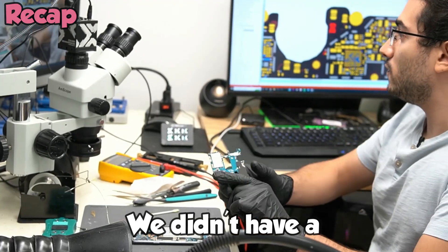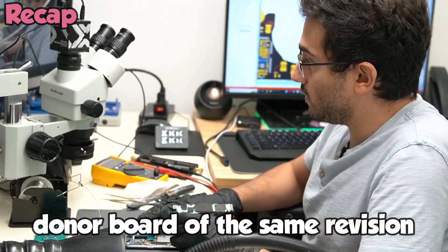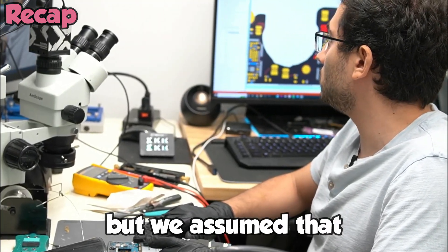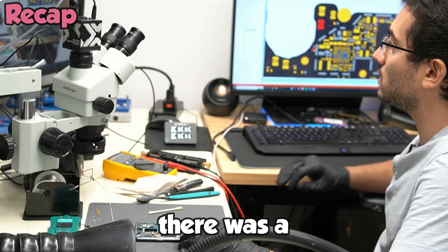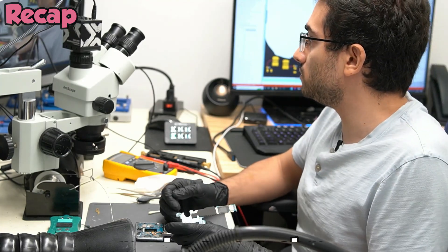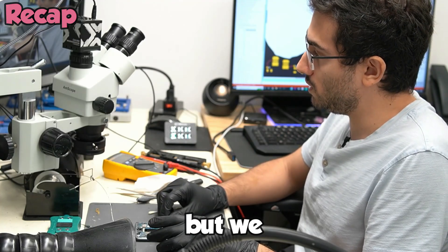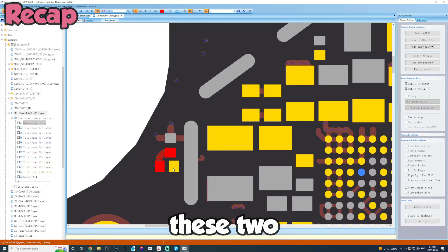We didn't have a donor board of the same revision to compare, that would have made things a little easier, so we were a little bit blind. But we assumed that missing connection there was a resistor, maybe a zero ohm, anyway it's hard to say. But we used our best guess and connected these two points together.